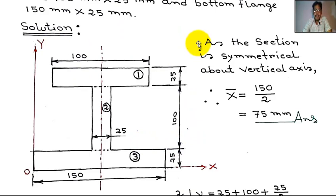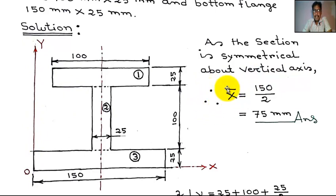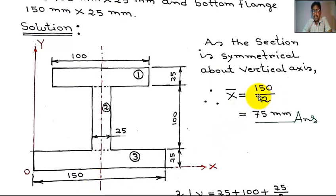Solution: As the section is symmetrical about the vertical axis, x̄ equals 150/2 = 75 mm. This distance x̄ = 75 mm is measured from the vertical axis OY to the centroid of the section.